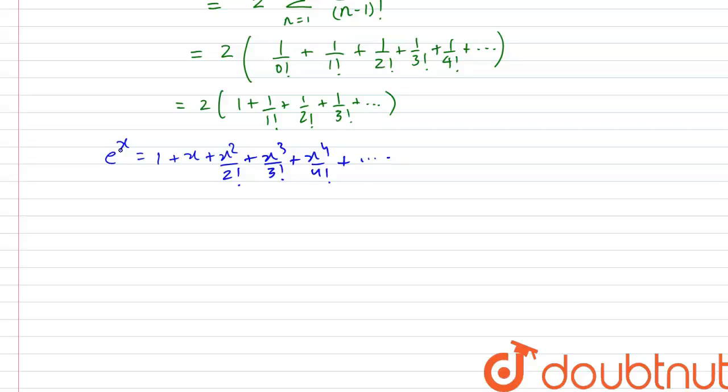So instead of e to the power x, if we write e to the power 1, so e to the power 1 would be 1 plus 1 plus this would be 1 by 2 factorial plus 1 by 3 factorial plus 1 by 4 factorial. And if you recognize, this is exactly what we have here: 1 plus 1 plus 1 by 2 factorial and so on. So this term inside this bracket is nothing but e, e to the power 1.